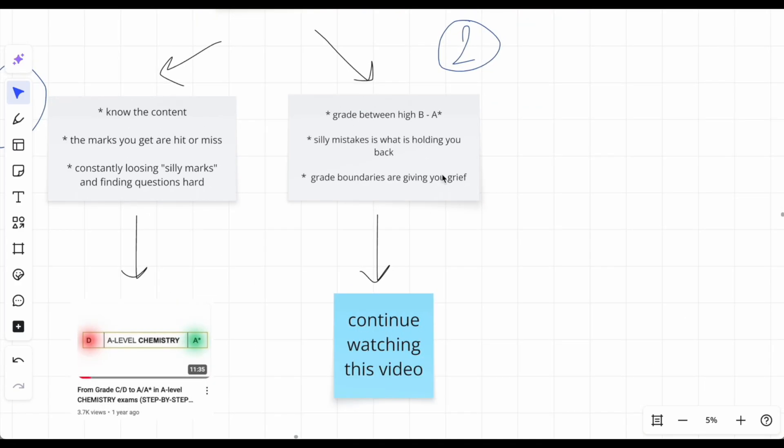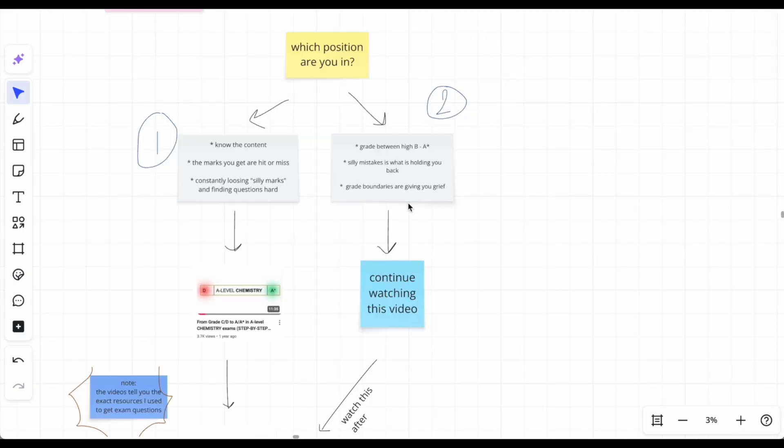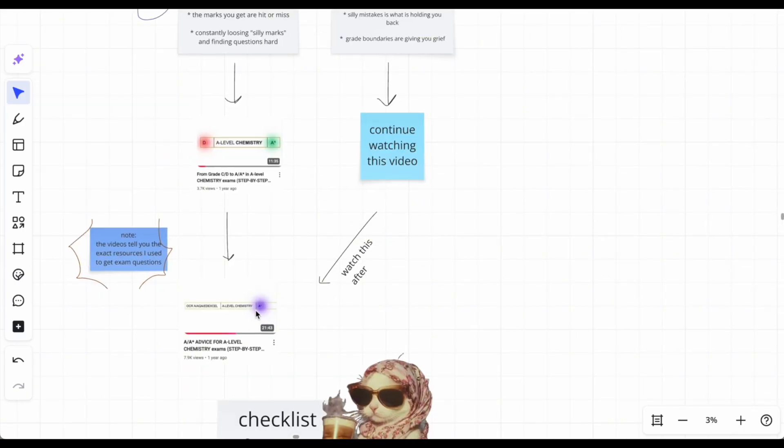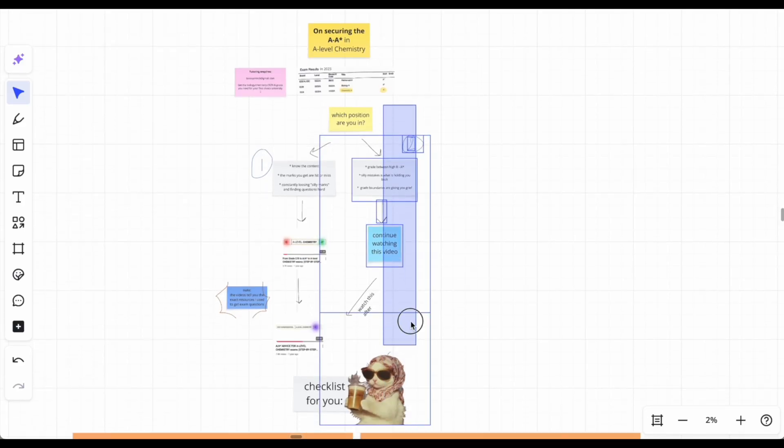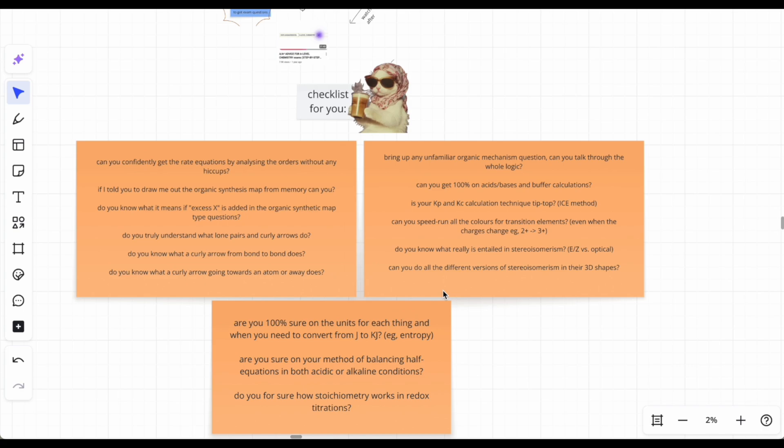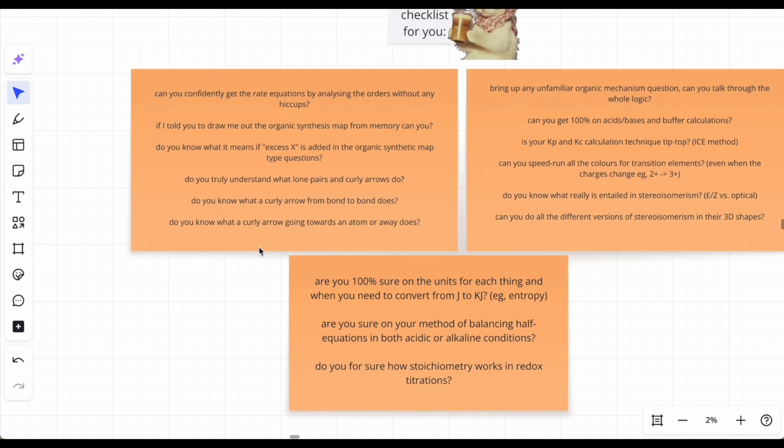Second track: your grades are between a high B to an A*, silly mistakes are genuinely holding you back, and the grade boundaries give you immense grief. What do you mean over 90% is an A*? People are doing too much. If you're in that position, continue watching. Remember, watch this one as well afterwards. Into the checklist - it's extremely niche, but niche things add up the marks. If you're trying to secure that A to A*, you need the niche marks to get to those grades.